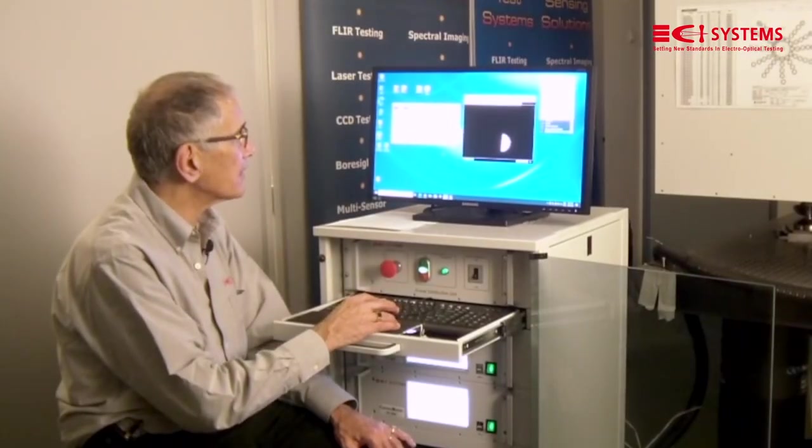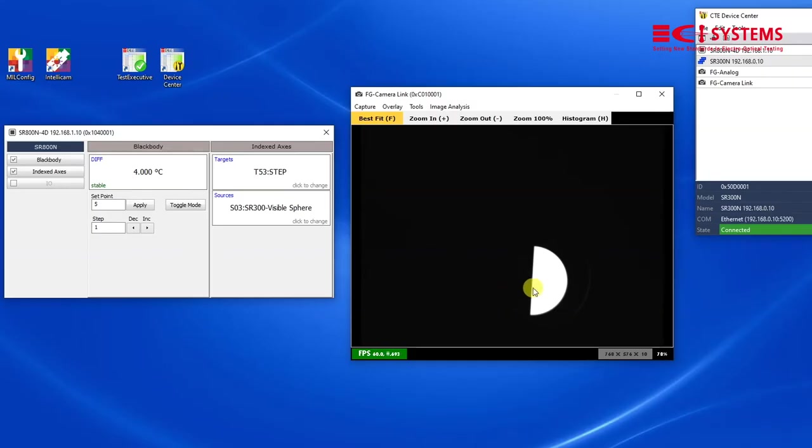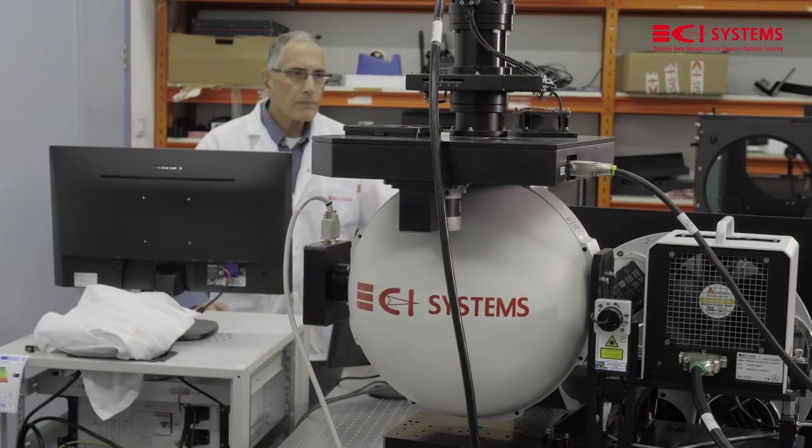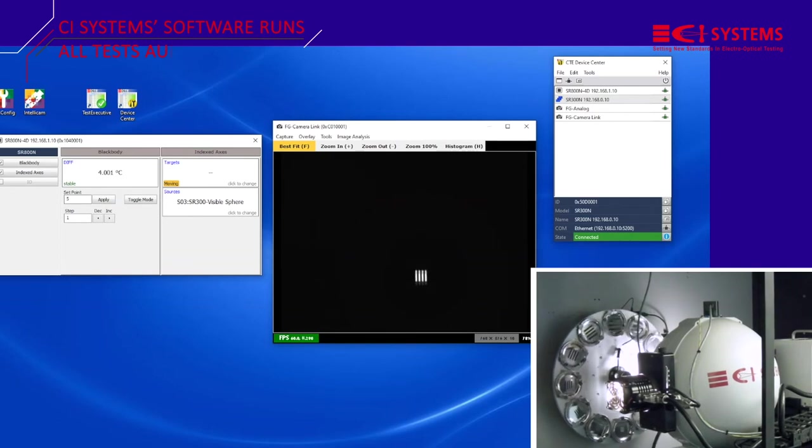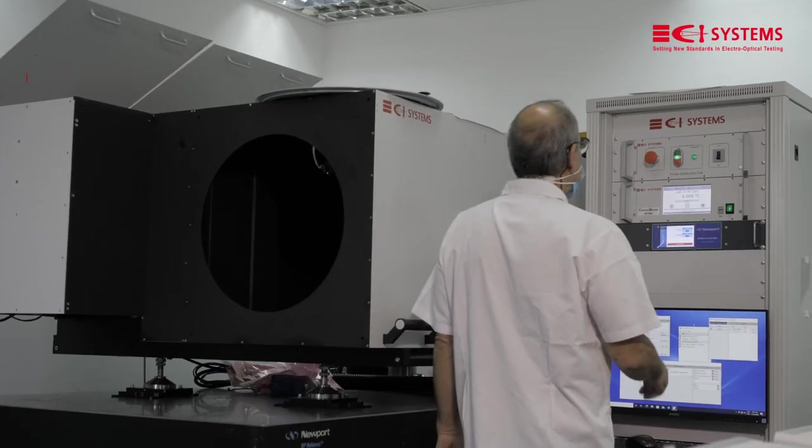Drive systems power the target wheel to swap targets and the linear stage to swap radiation sources. All this is done directly on the controllers from the operator's workstation or using our CTE software that runs the tests automatically.